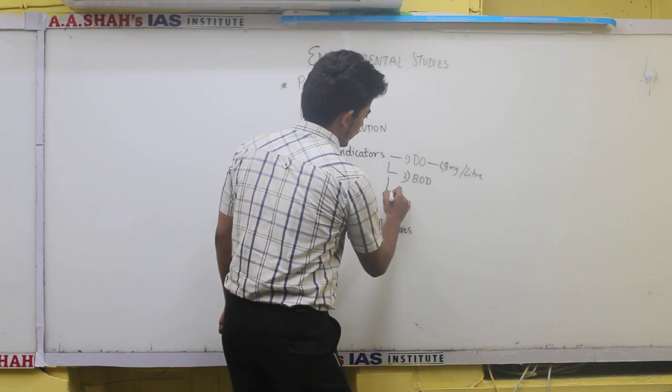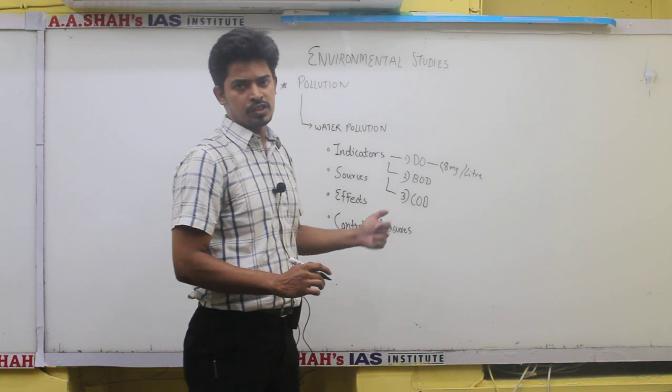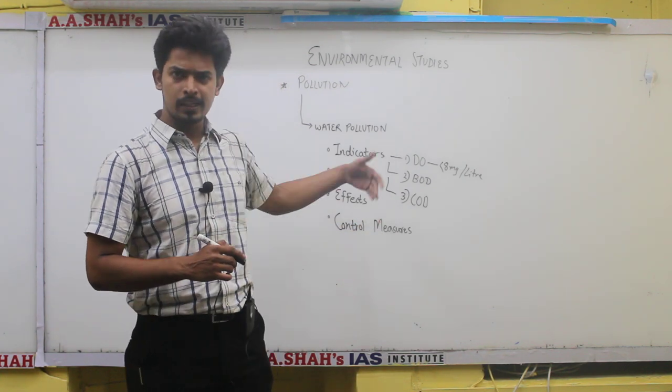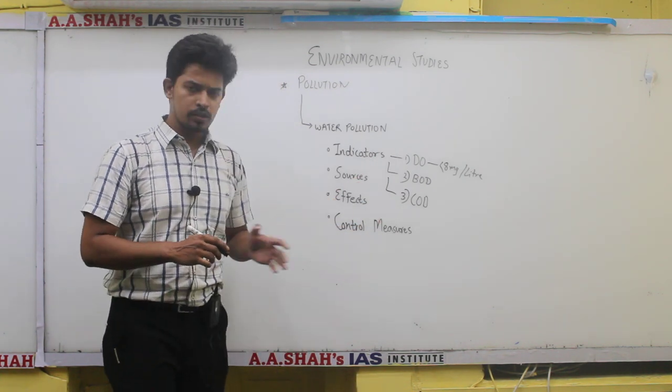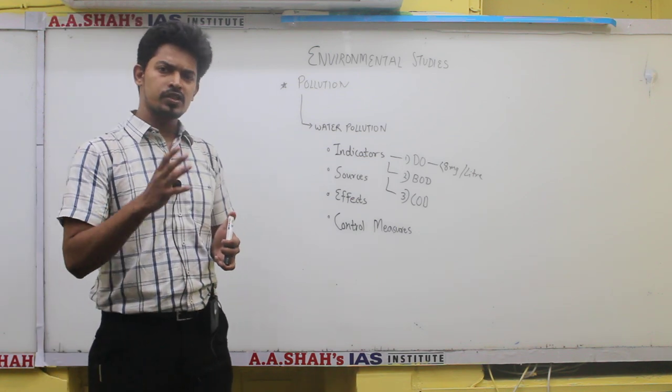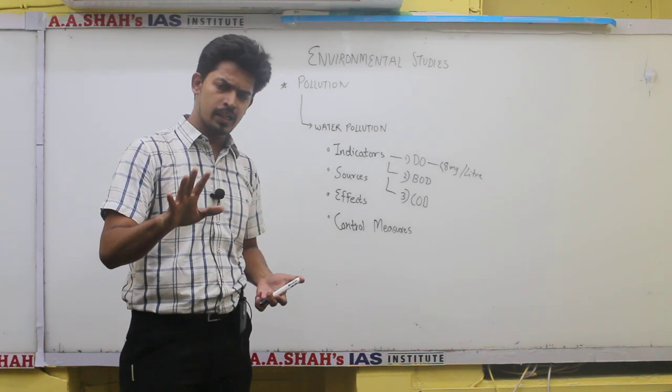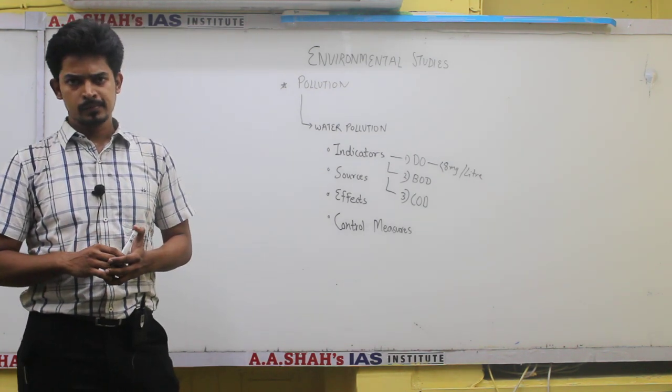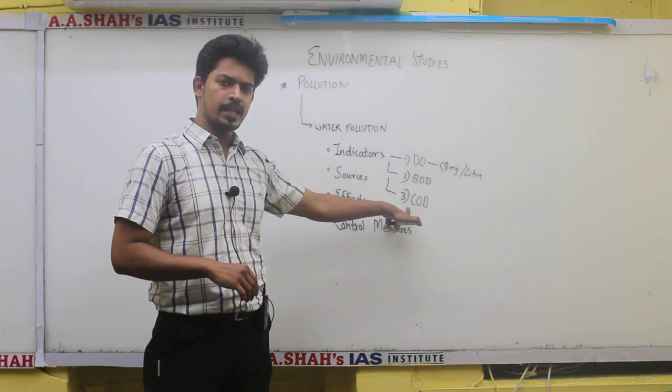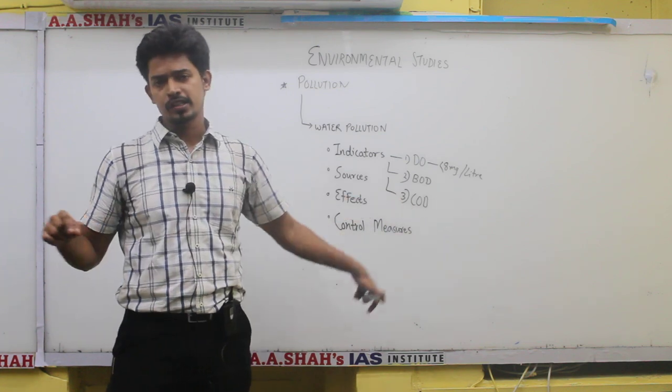Similarly, there is one more indicator and that is COD - chemical oxygen demand. It is more reliable than BOD because COD takes into consideration the amount of oxygen required to oxidize all organic matter, whether biodegradable or non-biodegradable. This is a much more reliable indicator and mostly used to analyze how much water is contaminated.